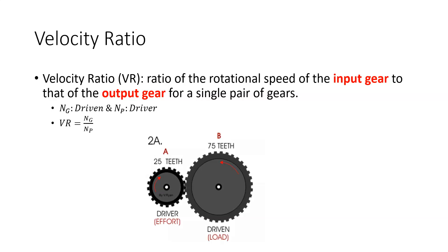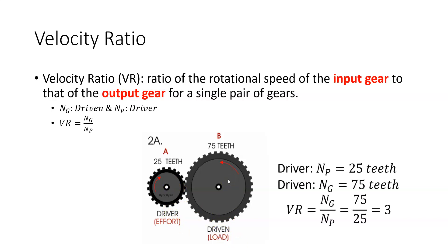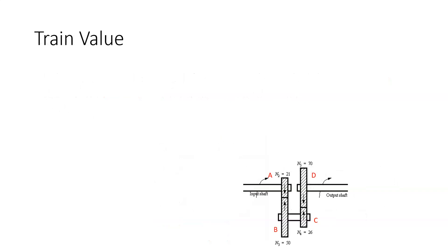So it's just a multiplier. When we look at two gears together — one is 25 teeth and one is 75 teeth, where the driver has 25 and the driven has 75 — the velocity ratio is 75 to 25, or three. That three is going to be the multiplier for knowing how much the speed changes or how much the torque changes. When we think about train value, we're looking at the same concept — it's a multiplier, but now we're looking at a whole gear train, not just a pair of gearing.